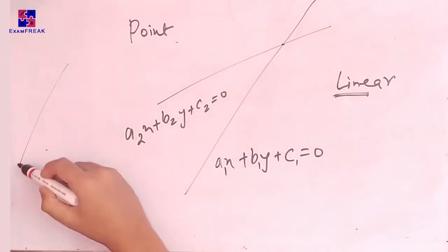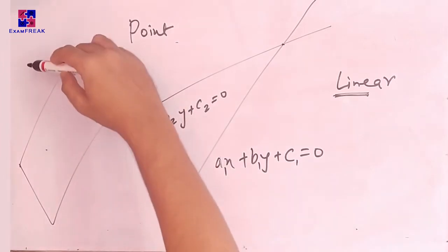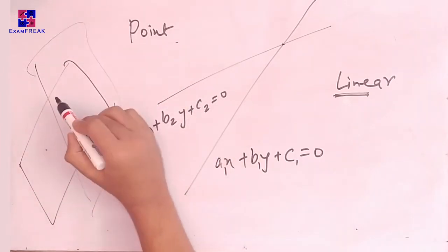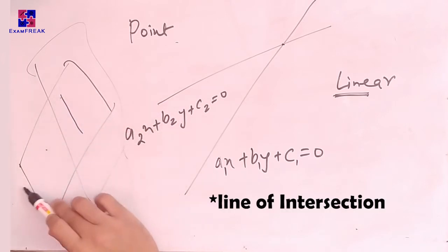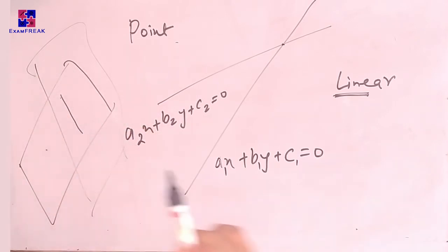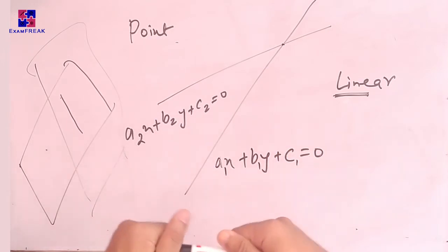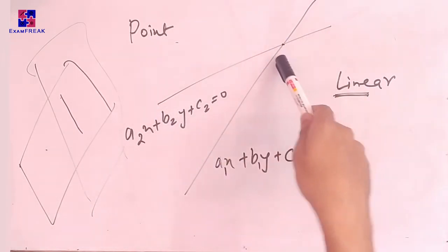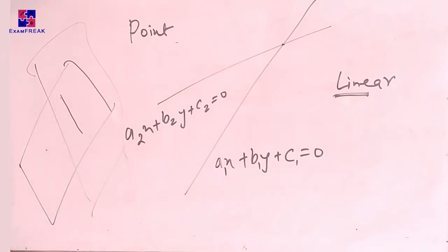Just like a point can be defined by the intersection of two lines, a straight line can be defined as the intersection of two planes. For example, suppose this is one plane and this is another plane — you can think of them as cardboards. Then the line where this plane and this plane meet is a straight line. So a straight line can be defined by the intersection of two planes.